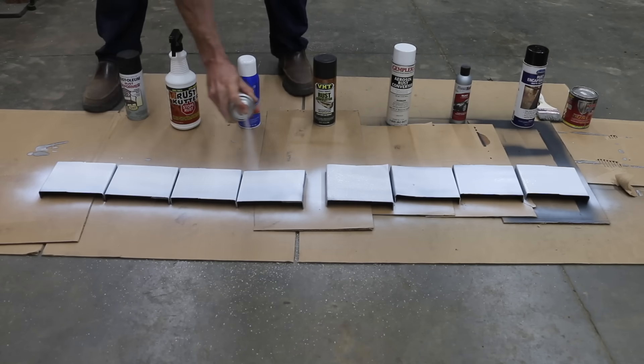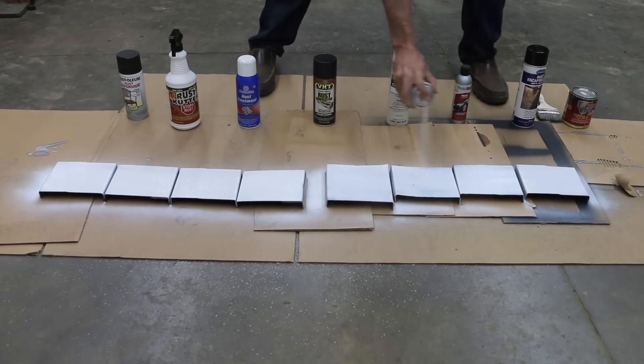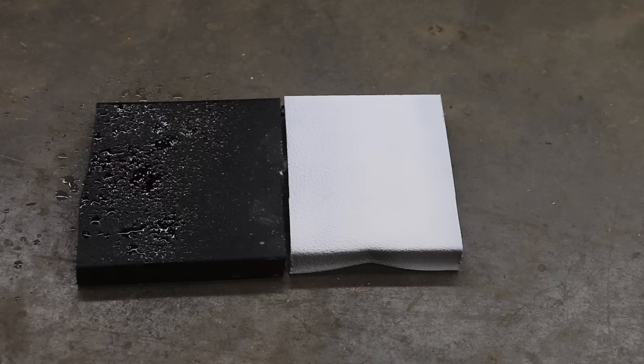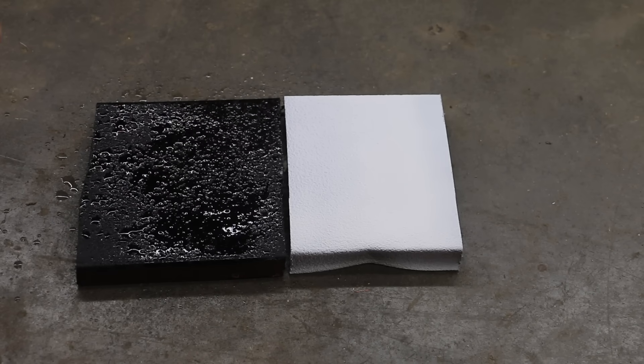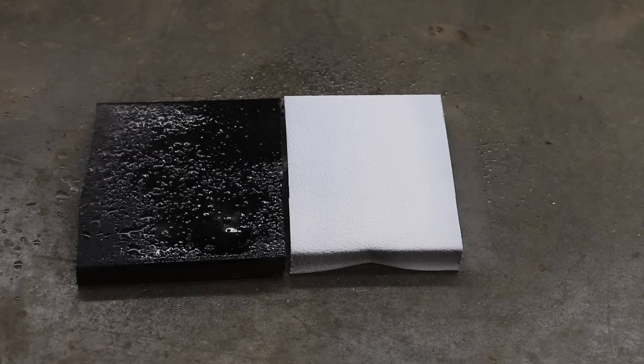Since applying Rust-Oleum 2X to one-third of the test panels, I've allowed the paint to cure for 72 hours. I'll apply a very aggressive rusting agent, which consists of hydrogen peroxide, vinegar, and salt. I'm also going to place the panels outside where they can be exposed to the elements.